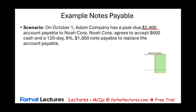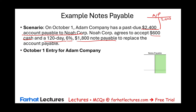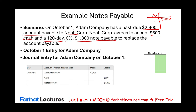Example: On October 1st, Adam Company has a past-due $2,400 accounts payable to Noah Corporation. Noah agrees to accept $600 cash and finance the remaining $1,800 as a 120-day, 6% note. The entry on October 1st: debit accounts payable $2,400; credit cash $600; credit notes payable $1,800. The accounts payable is gone, replaced partially by cash and a new note.